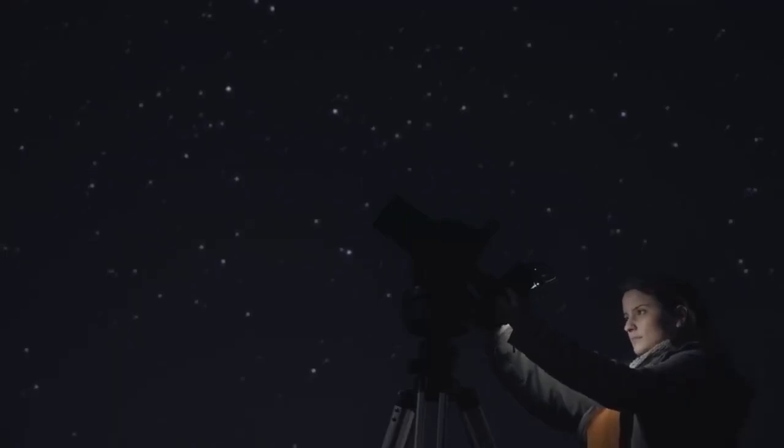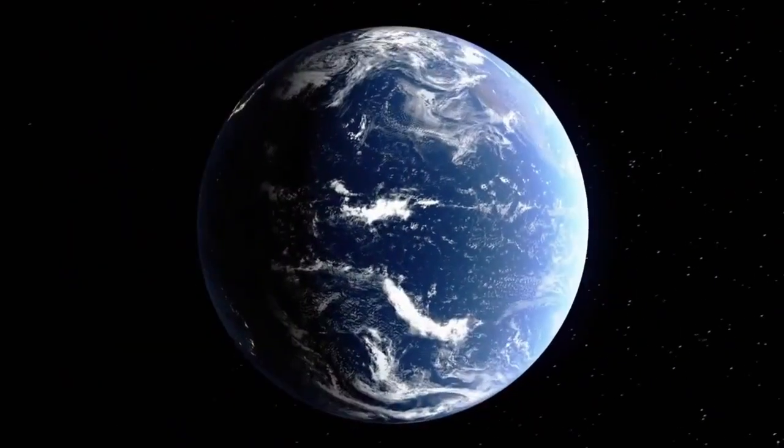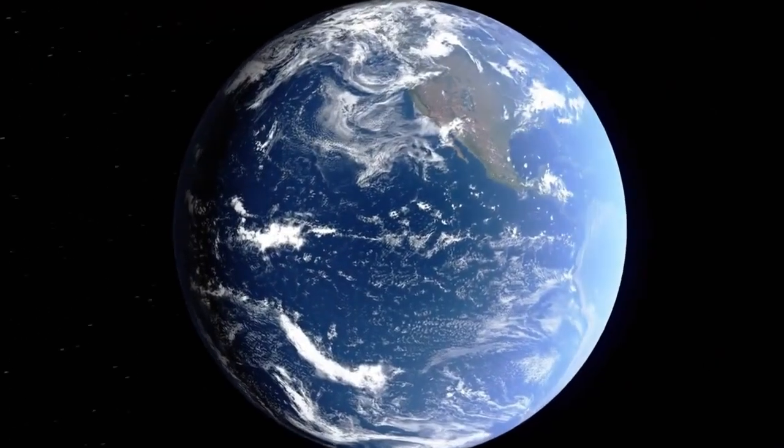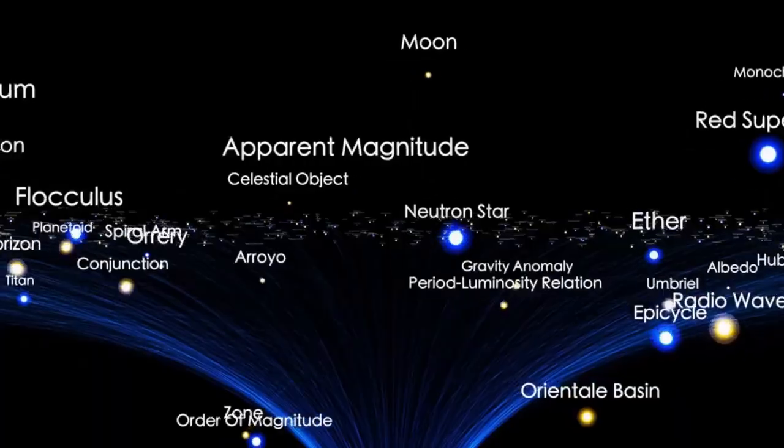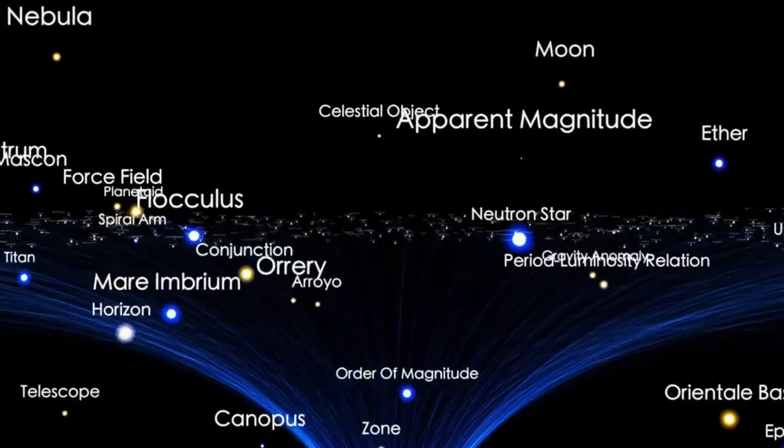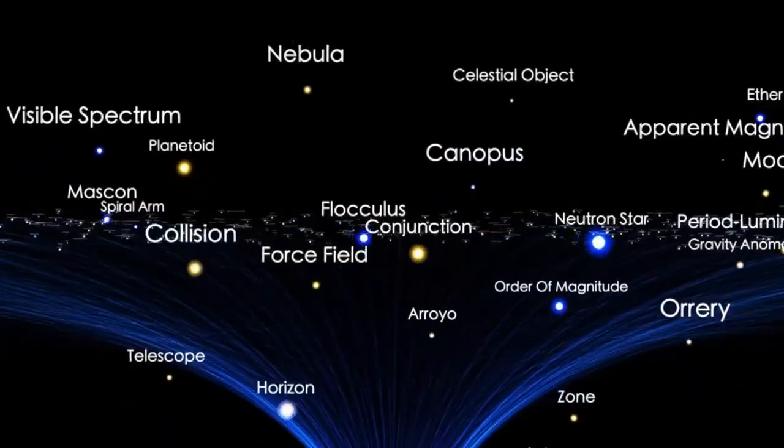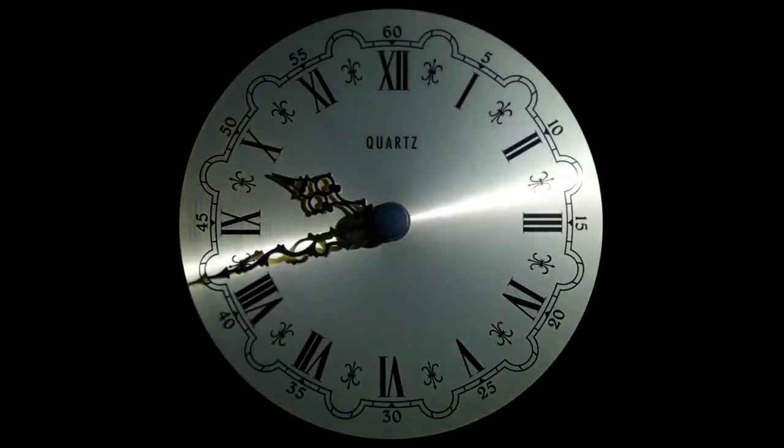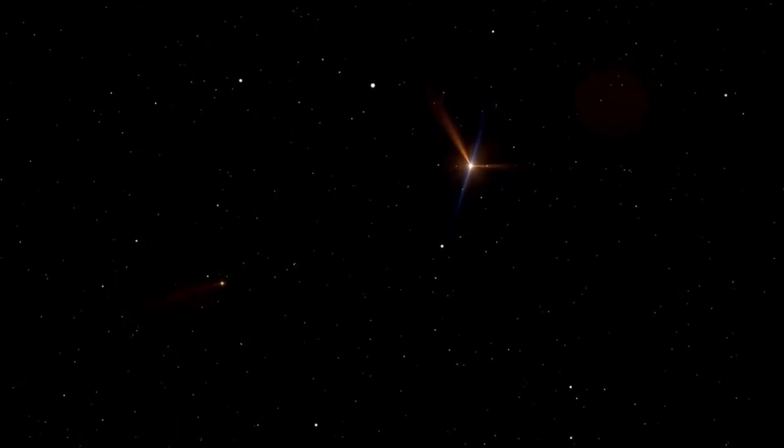With the James Webb Space Telescope ongoing, we can only anticipate more revelations regarding K2-18b and numerous other worlds outside our solar system. Every new spectrum, every new molecule identified, is a piece of the cosmic puzzle. Somewhere down the line, we may find the day when we sense unmistakable proof of life in Hycean clouds and ice-shrouded seas on a distant moon, or in the faint murmurs of an extraterrestrial biosphere conveyed across light-years of space. Then we shall stay poised at the boundary of cosmic wisdom, looking into the darkness with awe, curiosity, and hope.